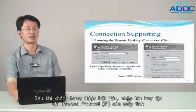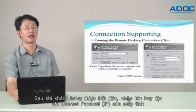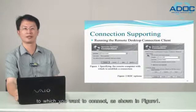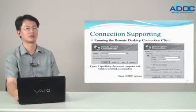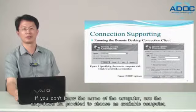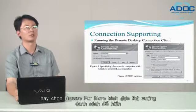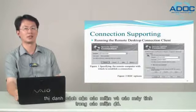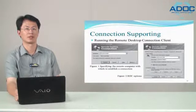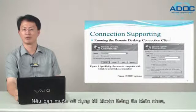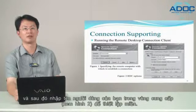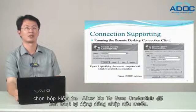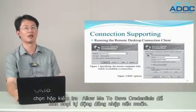After the client is started, enter the name or IP address of the computer to which you want to connect, as shown in the figure. If you don't know the name of the computer, use the drop-down list to choose an available computer, or select Browse mode to display a list of domains and computers in those domains. If you want to use different account information, click Options and enter your username in the field provided. To set the domain, allow the save credential checkbox to enable automatic logon if desired.